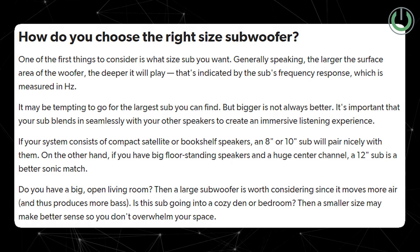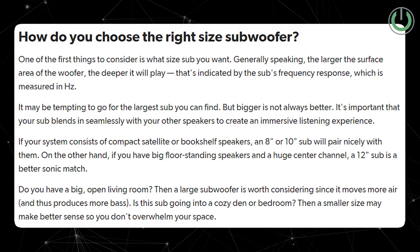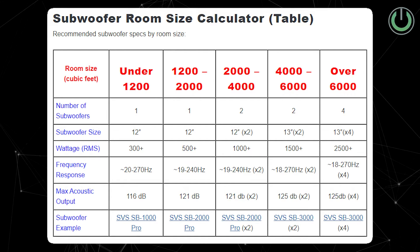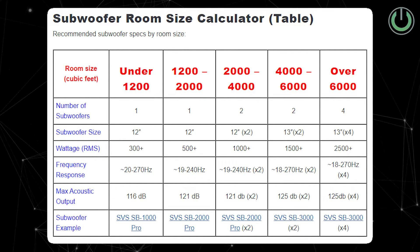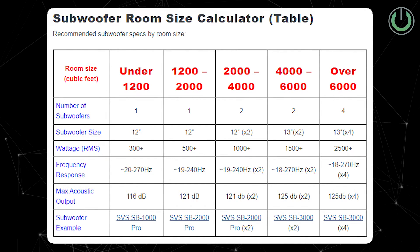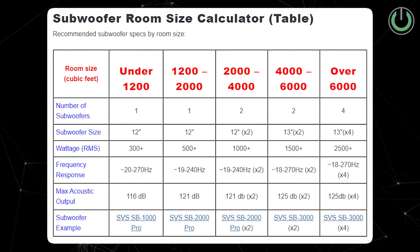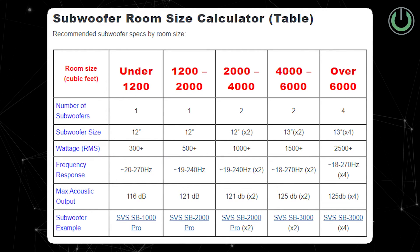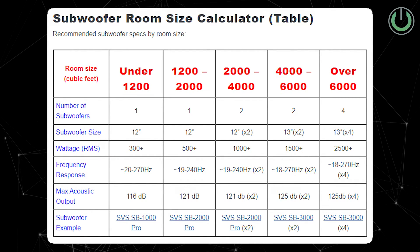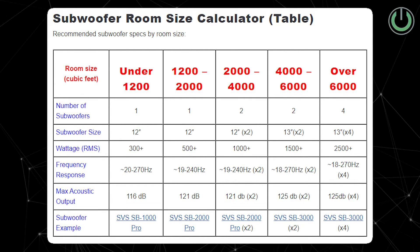The very first thing you need to understand while selecting a subwoofer for a home theater system is your room. Your room size plays a very vital role because based on room size you have to calculate the power you'll need. If the room is small — around 100 square feet — you would not need more than 100 to 150 watts of powered subwoofer. Similarly, if your room is big, around 300 to 400 square feet, then you need at least 500 to 1000 watts of subwoofer power.